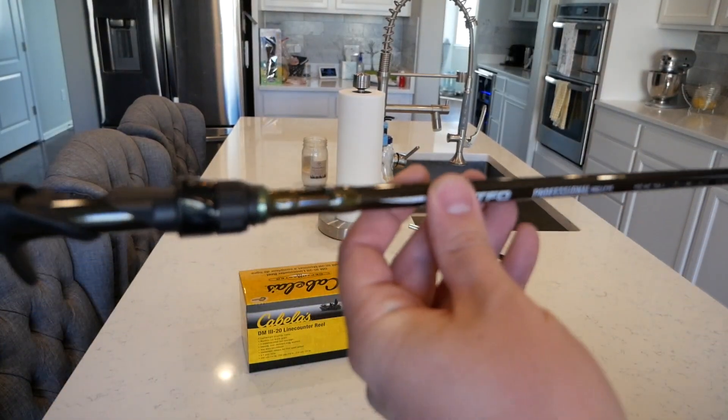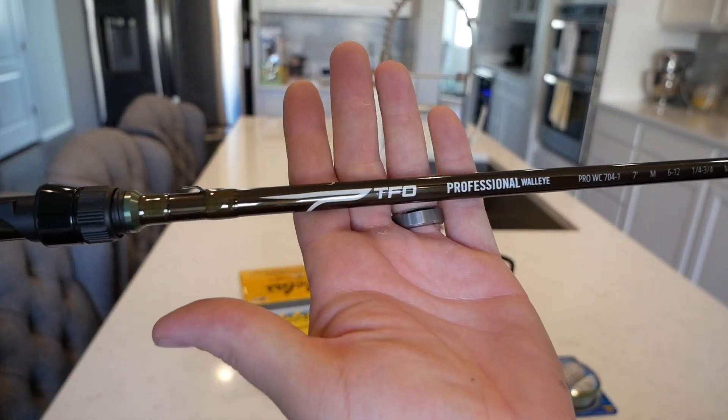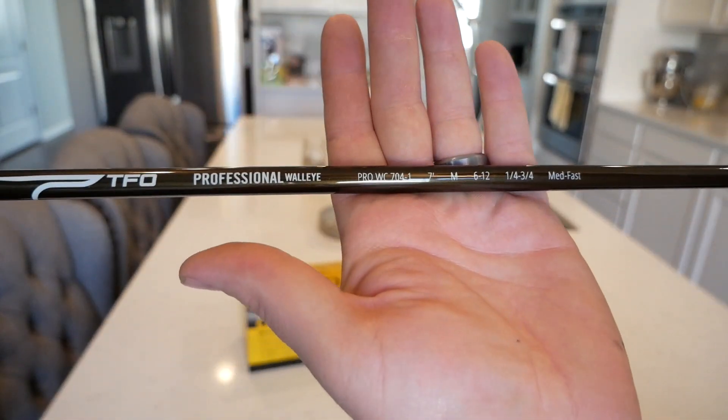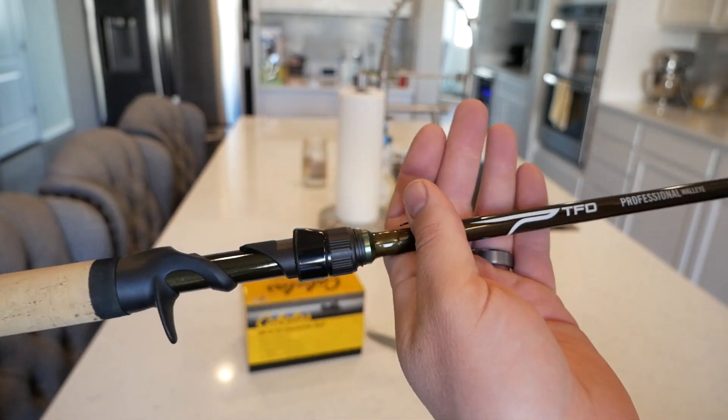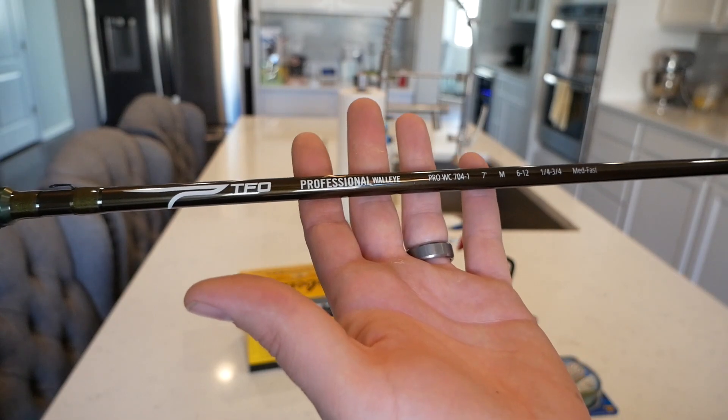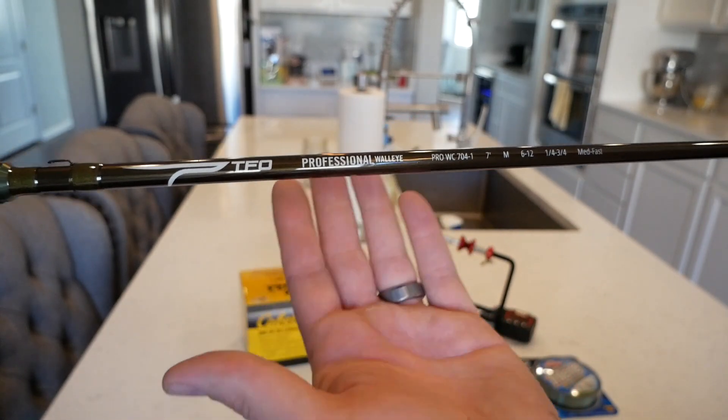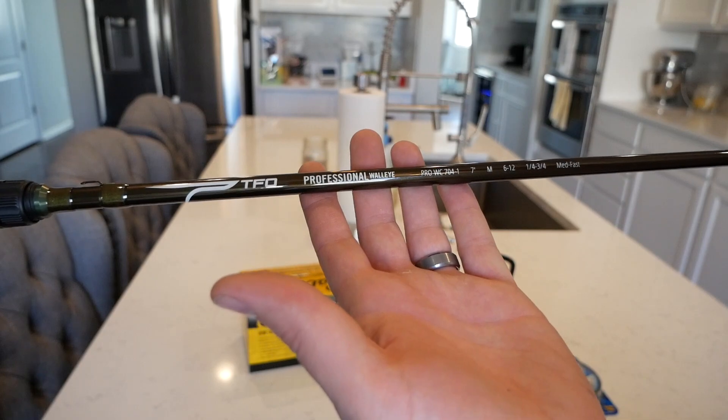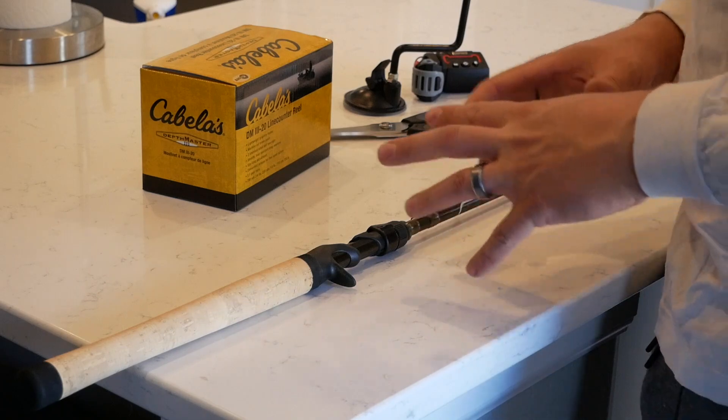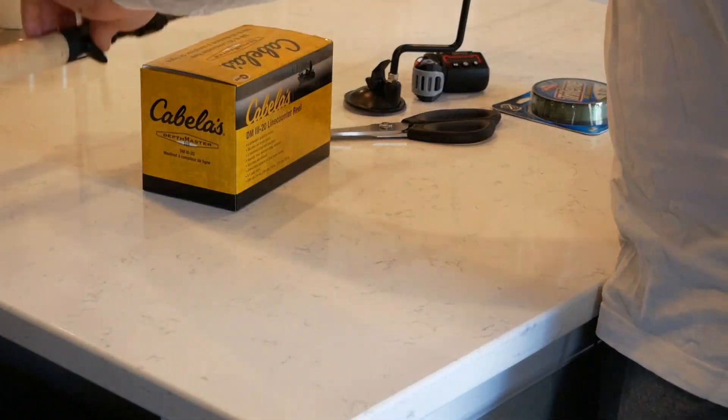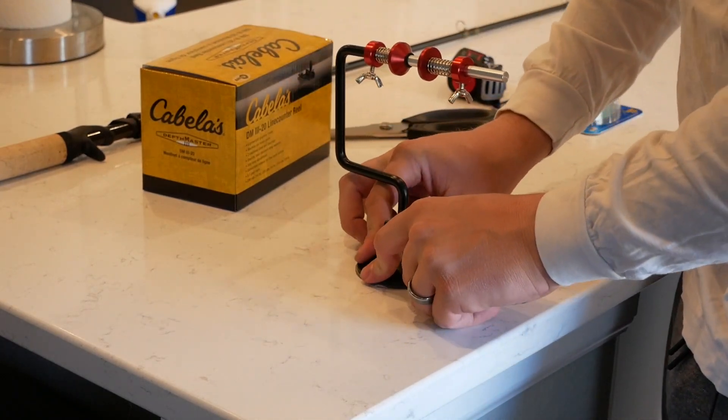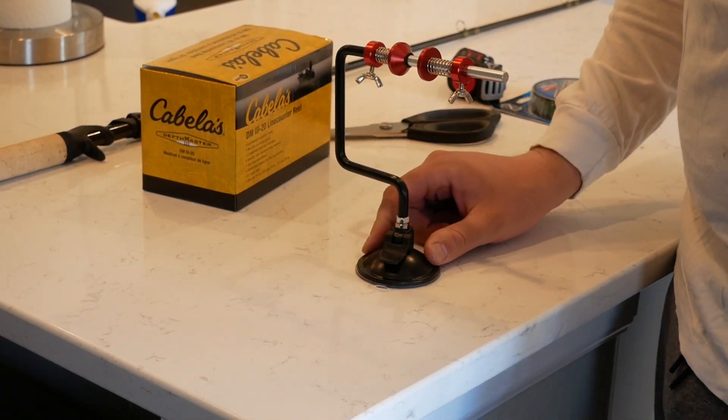And last but not least we'll be spooling up the TFO Professional Walleye casting rod in seven foot medium. I like to use these seven foot mediums for most of my trolling purposes. They make it easier to switch out rods when you catch fish and just all around a much better setup for a boat in tight spaces working with multiple rods. All right so basically what I'm going to do here is get us all set up. So we are going to take the spool clamp and I'm literally just going to clamp it down onto the countertop here.